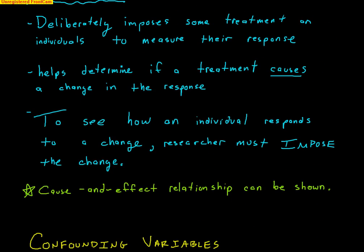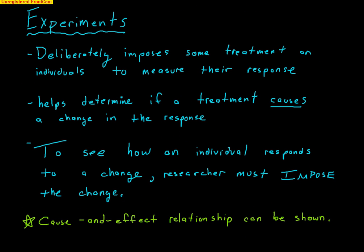This is the reason why we have another type of way to answer research questions. Another way to answer a research question is with an experiment. In an experiment, we deliberately impose some treatment on individuals to measure their response. It helps us determine if a treatment causes a change in the response. To see how an individual responds to a change, the researcher must impose that change. In an experiment, we actually tell some women they are going to take these hormones and the other group they are not. Because in an experiment we have control — we are the ones giving out the treatment, not just observing — we can show cause and effect relationships.